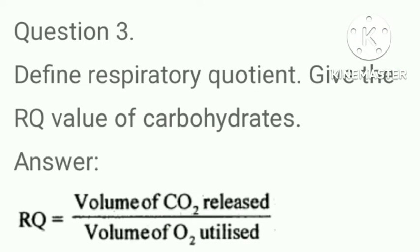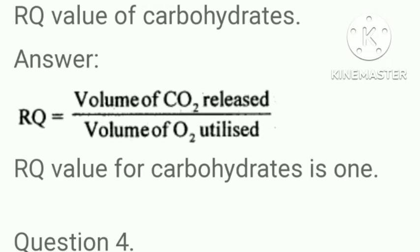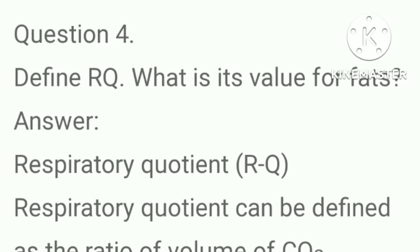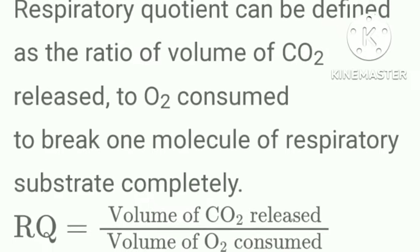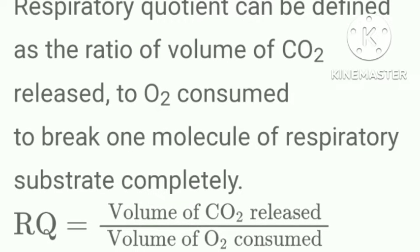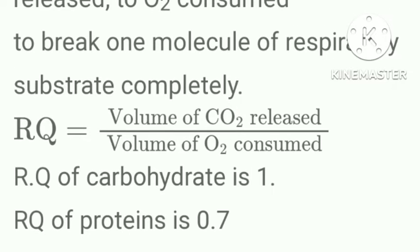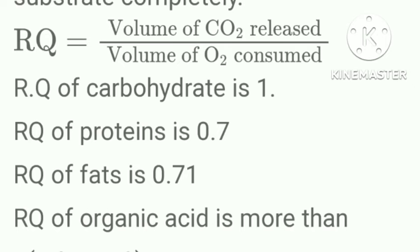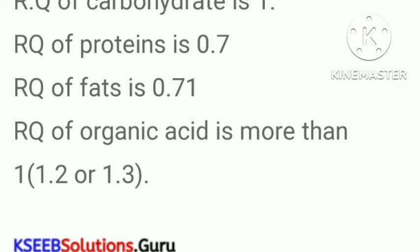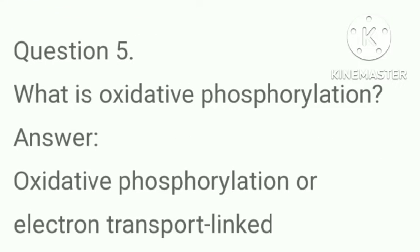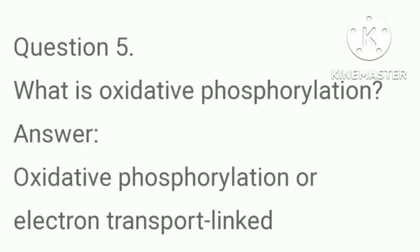Define respiratory quotient and give the RQ value of carbohydrates. The RQ value of carbohydrates is 1. Define RQ and give its value for fats. Respiratory quotient (RQ) is the ratio of carbon dioxide released to oxygen consumed to break one molecule of respiratory substrate completely. RQ of carbohydrate is 1, RQ of protein is 0.7, RQ of fats is 0.71, and RQ of organic acids is more than 1 (1.2 or 1.3).